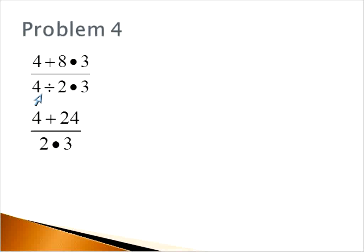First, we come to division. Then multiplication. Because division and multiplication get done from left to right. So 4 divided by 2 is 2.